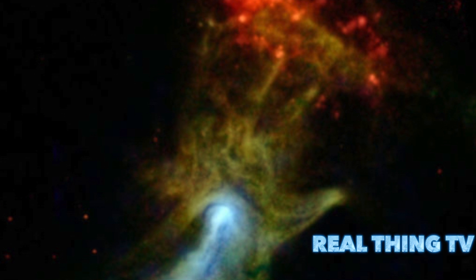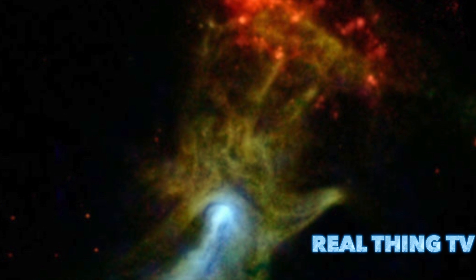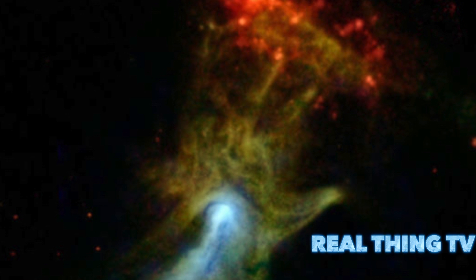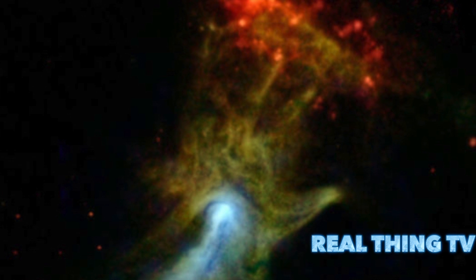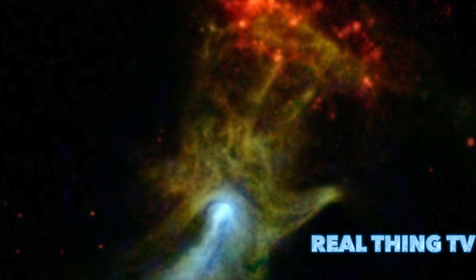As these particles interact with nearby magnetic fields, they produce an X-ray glow in the shape of a hand. The pulsar is located near the bright white spot in the image but cannot be seen itself, NASA officials said.